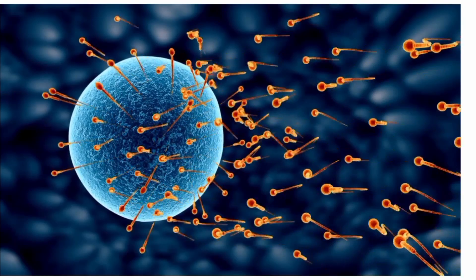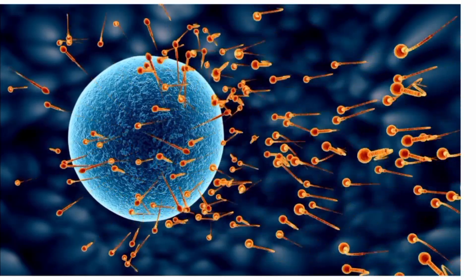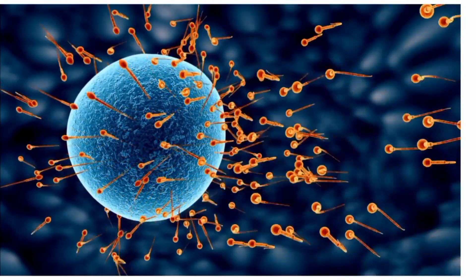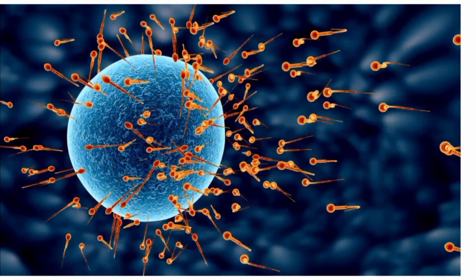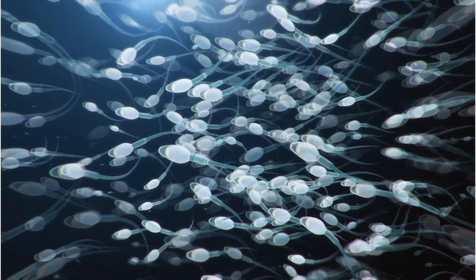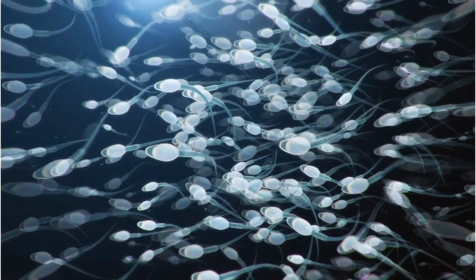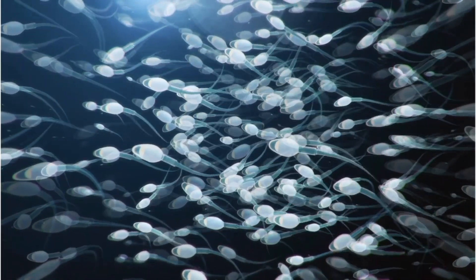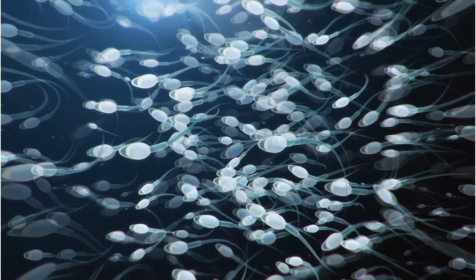Sperm is composed of a head, midpiece, and tail, and is characterized by its unique shape, which allows it to swim and move towards the female egg.